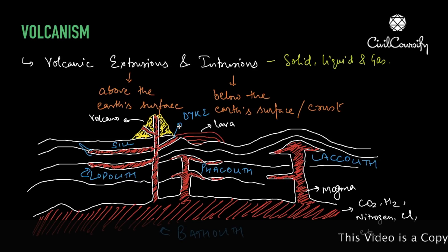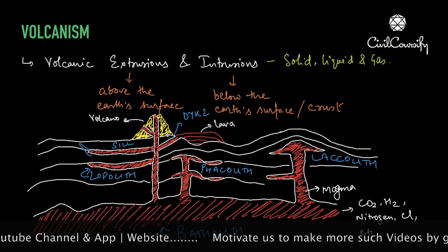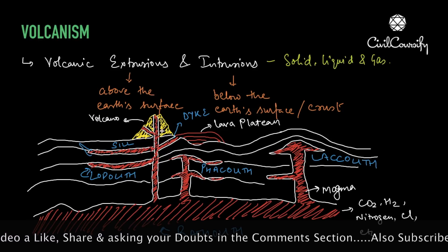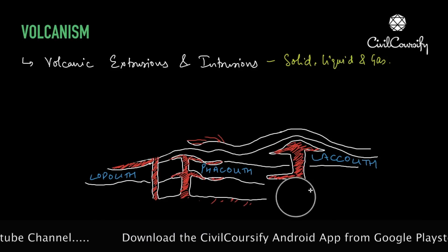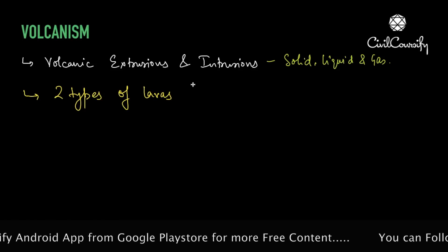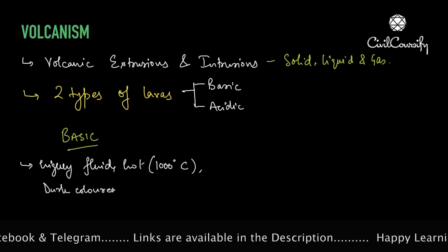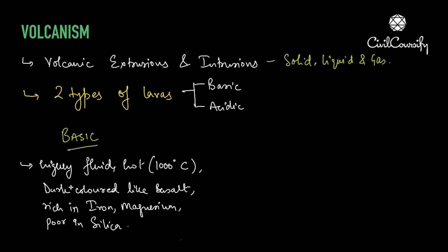Magma and lava have properties that decide what kind of landform is being formed. For example, in the case of dikes, a lava plateau is formed. There are two types of lavas: basic lava and acidic lava. Basic lava is very fluid, very hot up to 1000 degrees Celsius, dark colored like basalt, rich in iron and magnesium but poor in silica. Since it is highly fluid, it flows quietly out of the volcano, reaching good distances before solidifying. Volcanoes formed from basic lava are spread evenly.